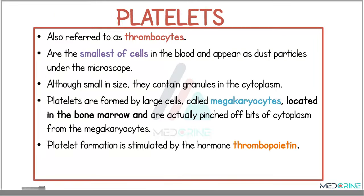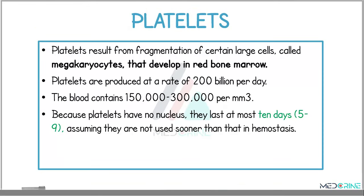Another type of blood cell is platelets, also known as thrombocytes. They are the smallest type of cells in the blood and appear as dust particles under a microscope. Although small in size, they contain granules in their cytoplasm. Platelets are formed by large cells known as megakaryocytes located in the bone marrow — they are actually pinched-off bits of cytoplasm from the megakaryocytes. Platelet formation is stimulated by a hormone known as thrombopoietin. Platelets are produced at a rate of 200 billion per day, and there are around 150,000 to 300,000 platelets per cubic millimeter of blood. Because platelets have no nucleus, they last at most 10 days, assuming they are not used sooner in hemostasis.